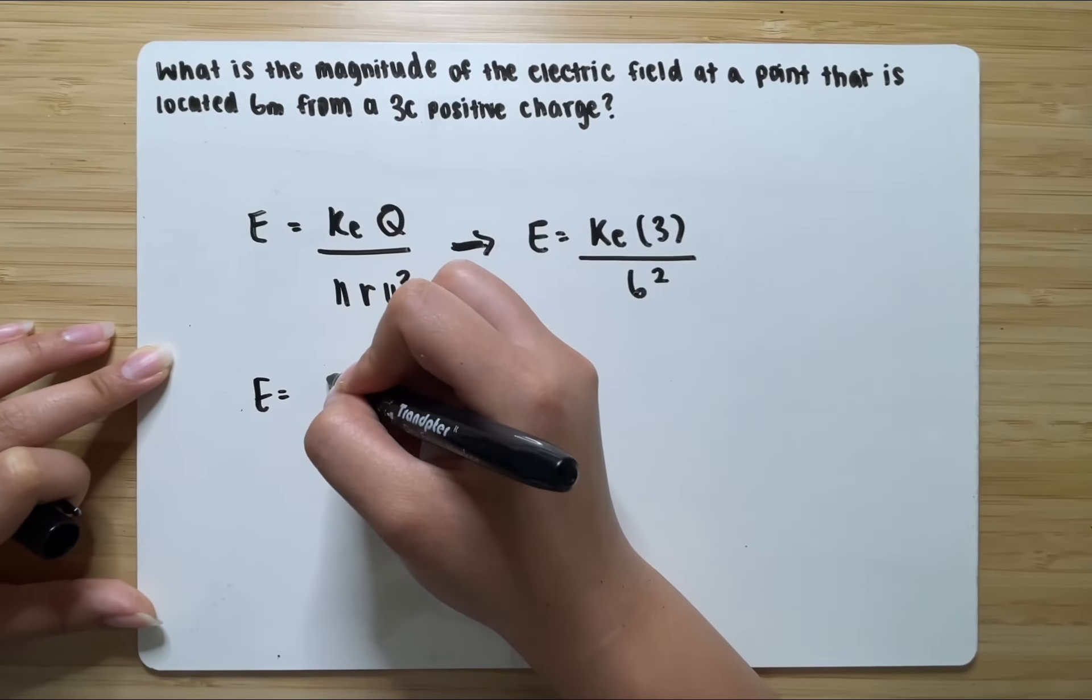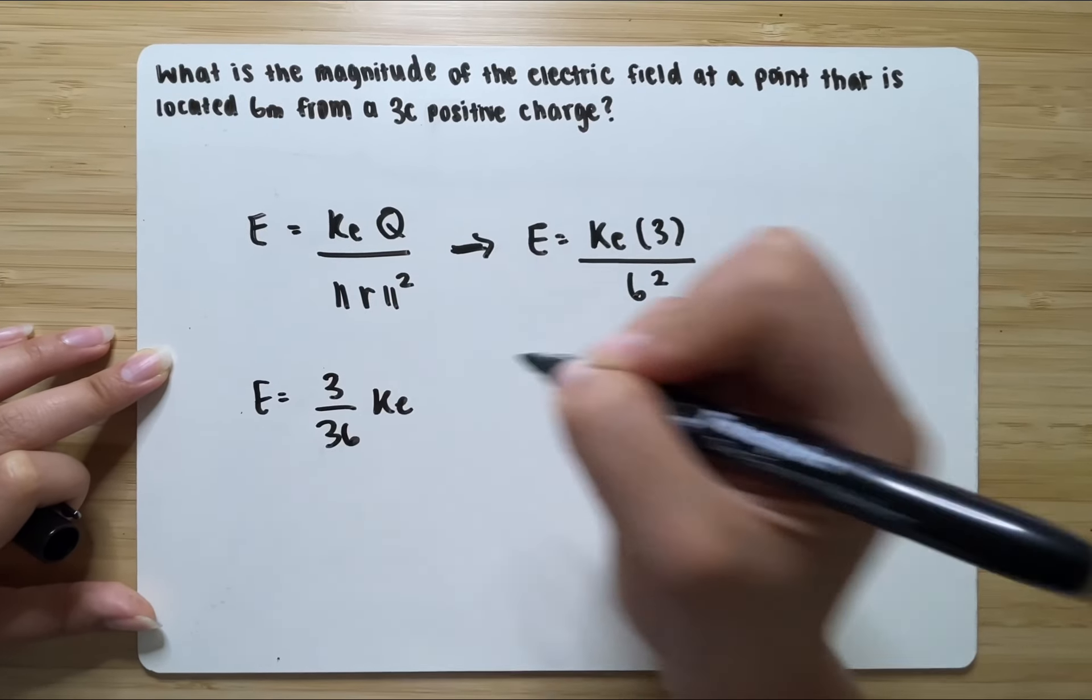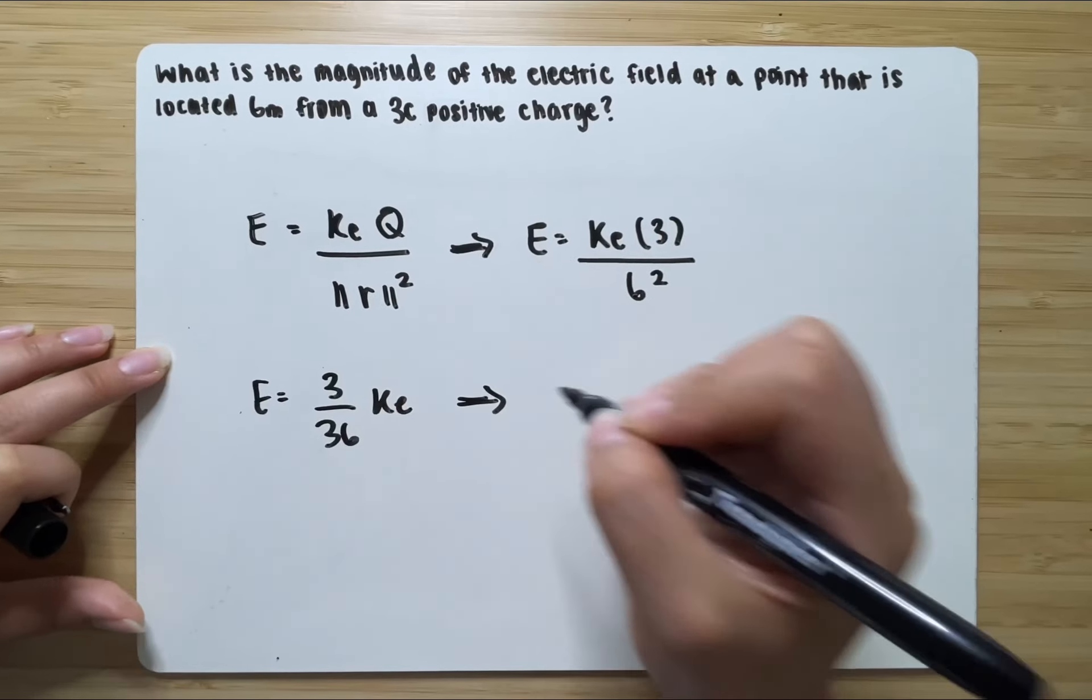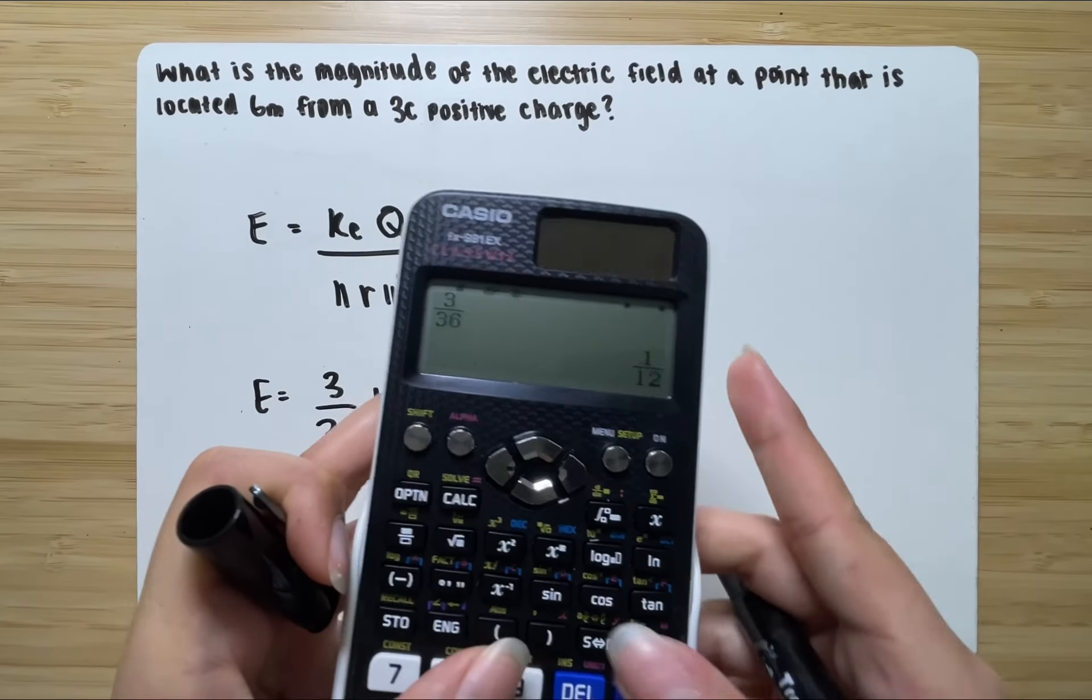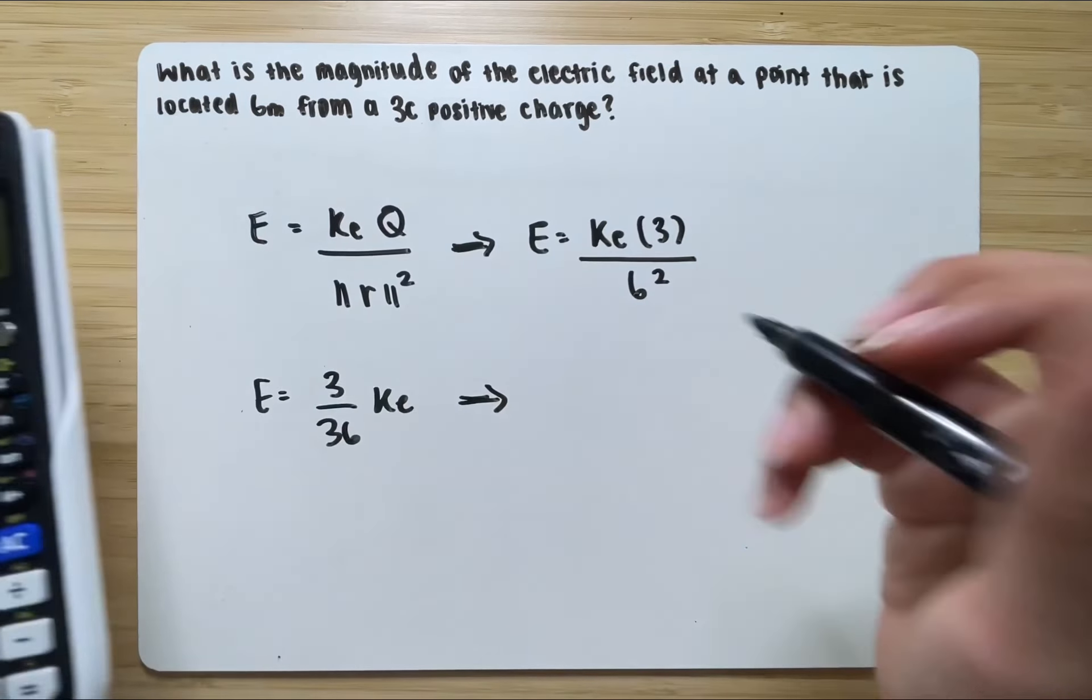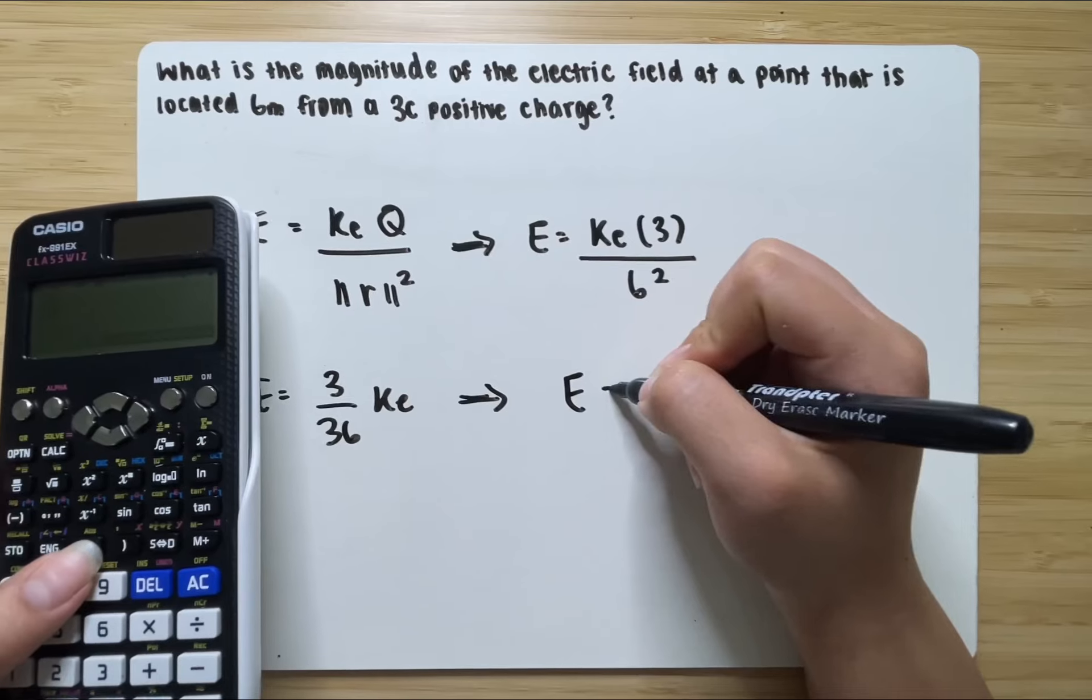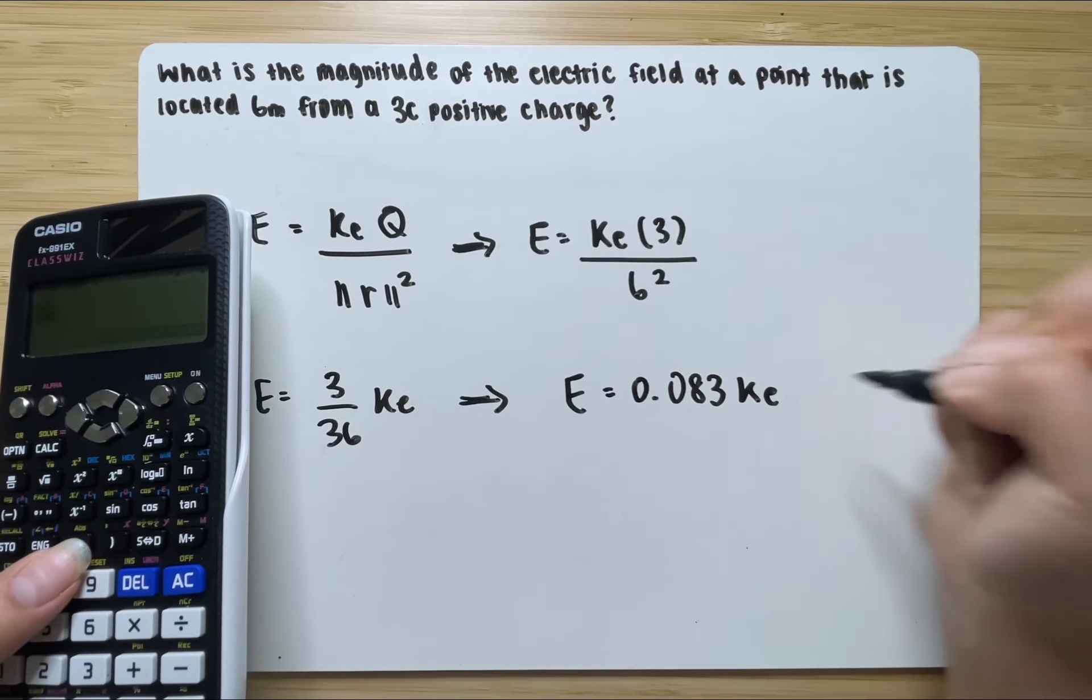equal to 3 over 36 times Ke, Coulomb's constant, which gives you 3 over 36 is 1 over 12. But in decimal form, you get 0.083 repeating, which you could write as E equals 0.083 times Coulomb's constant, and the unit would be newtons per Coulomb.